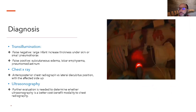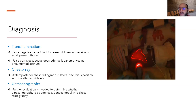If you suspect pneumothorax at the bedside, you can use a transilluminator — a bright light placed on the suspected side. Increased light transmission or redness indicates air in the pleural space. However, it is not always diagnostic: false negatives occur with small pneumothorax or increased skin thickness, and false positives may occur with subcutaneous edema, subcutaneous emphysema, or pneumomediastinum.